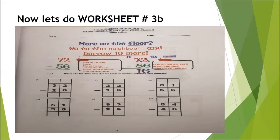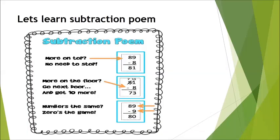Now let's do worksheet number 3B. In this worksheet there are empty boxes with each sum. On the top boxes you have to mention place values — that are tens and ones. The boxes under the questions are where you write the answers. In this worksheet you have to borrow to solve the sum. To solve this worksheet you need to learn the subtraction poem, which will make these sums easy for you. Now let's learn the subtraction poem: more on top, no need to stop. More on the floor, go next door and get 10 more. Numbers the same, 0 is the game.